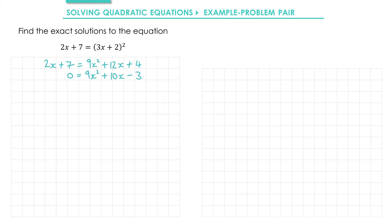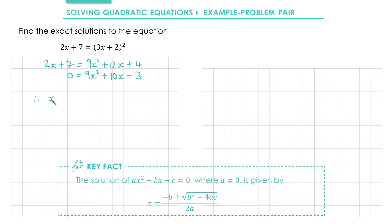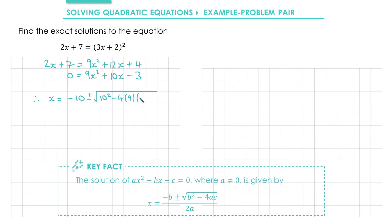Next I'm going to apply the quadratic formula. We have x equals minus b — that's going to be minus 10 — plus or minus the square root of b squared, which is 10 squared, minus 4ac: so 4 times 9 times negative 3. That's all divided by 2a; 2 times 9 is 18.